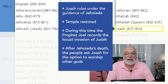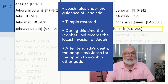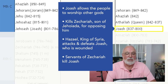Jehoash restores the temple and shows his love for God. It is during this time that the prophet Joel records the locust invasion of Judah and how God will restore the people. When Jehoiada dies, the people ask Jehoash for the opportunity to worship other gods. Jehoash allows this, and when he is opposed by Zechariah — the son of Jehoiada the high priest who just died — Jehoash kills him.